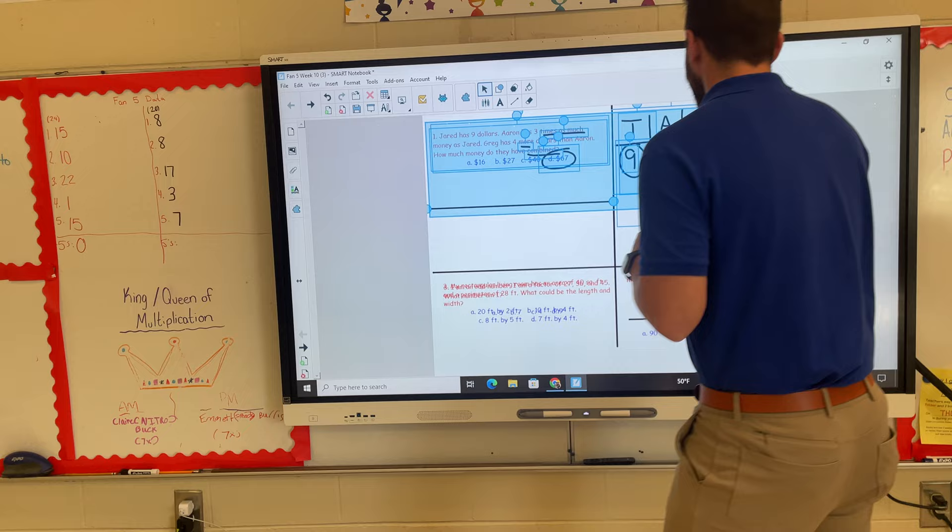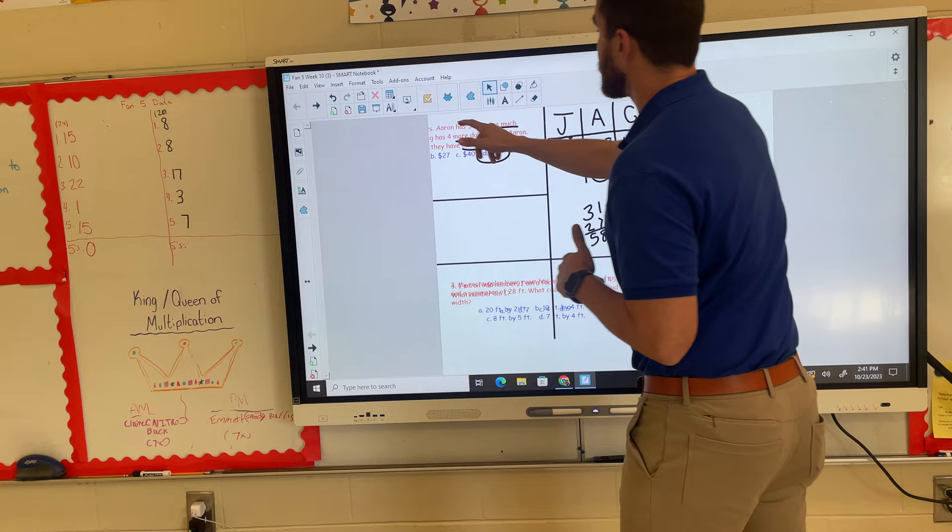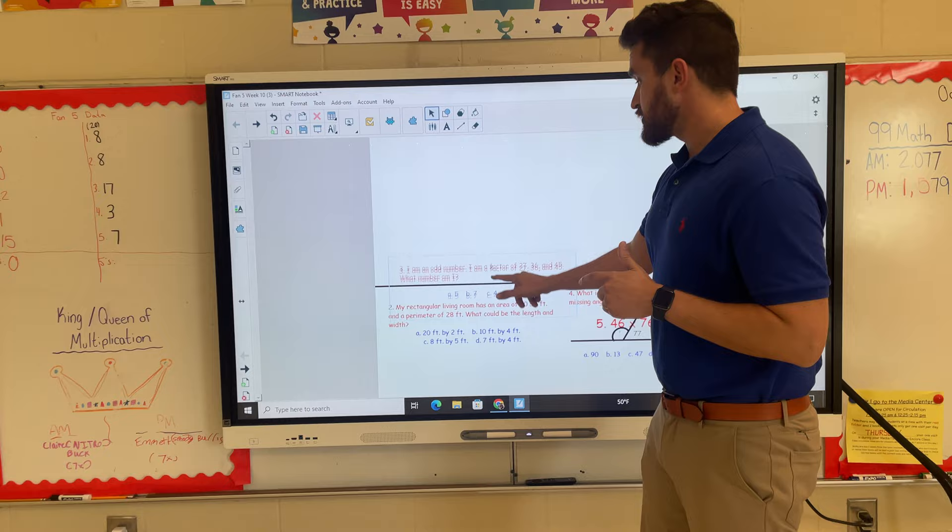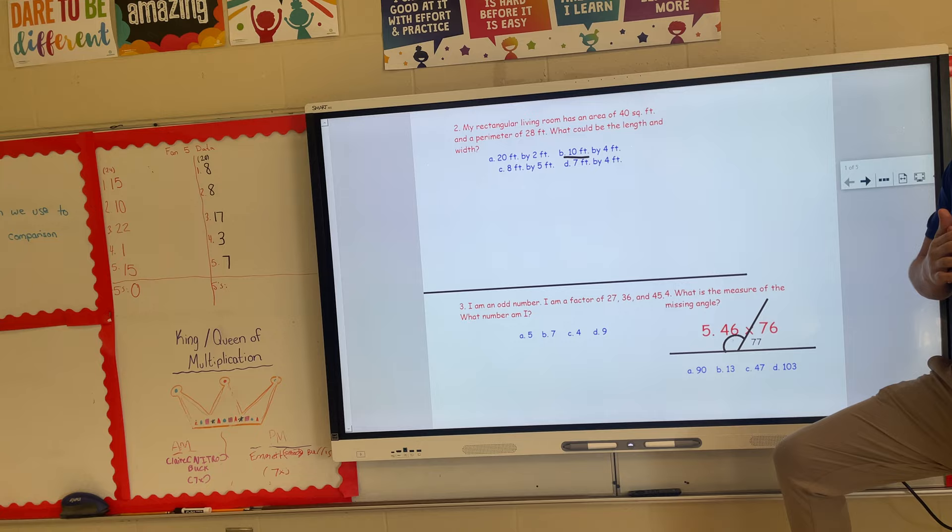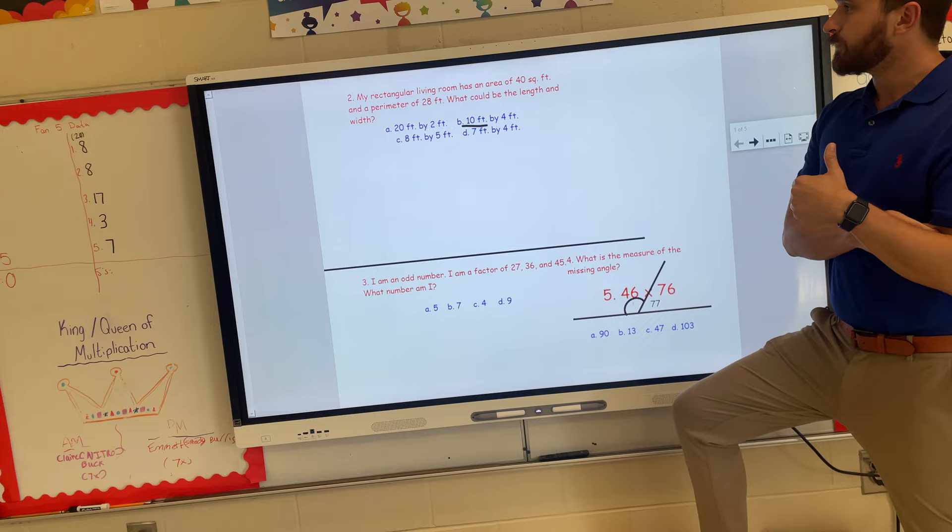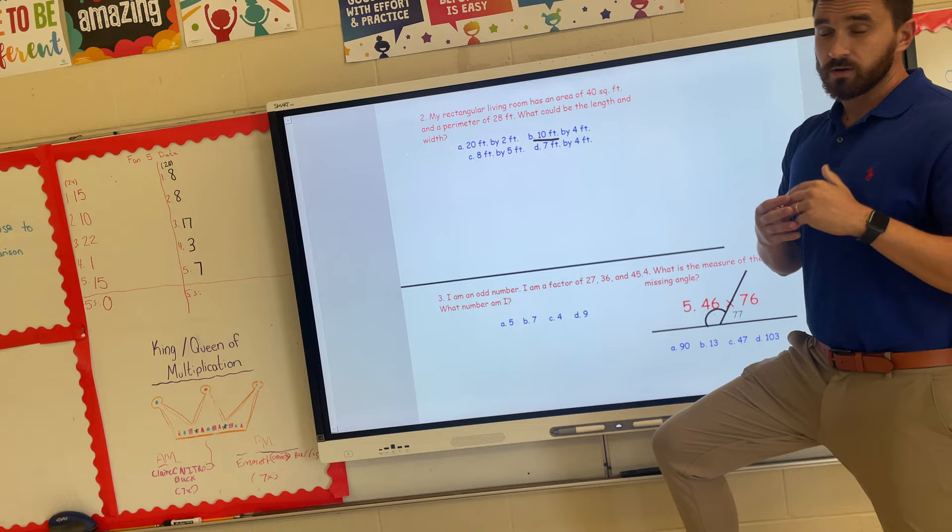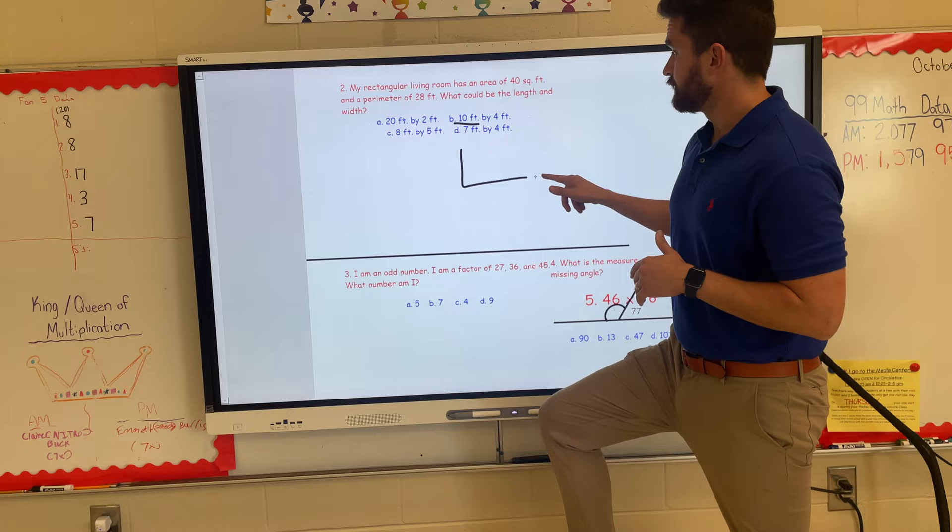Number two was the second lowest, which honestly I was kind of surprised because they dealt with area and perimeter in third grade. But I will say we haven't done anything like this this year, so maybe that's why. For number two, it says my rectangular living room has an area of 40 square feet and a perimeter of 28 feet. What could be the length and the width?